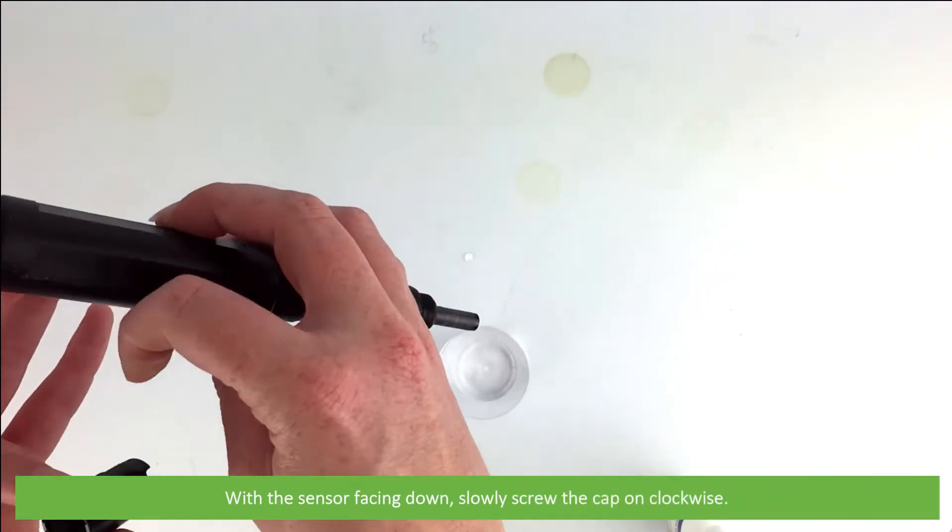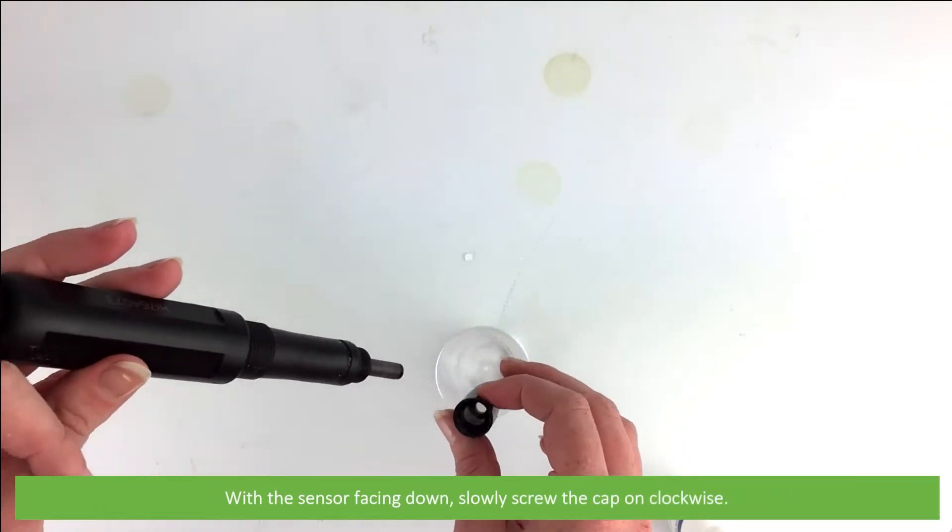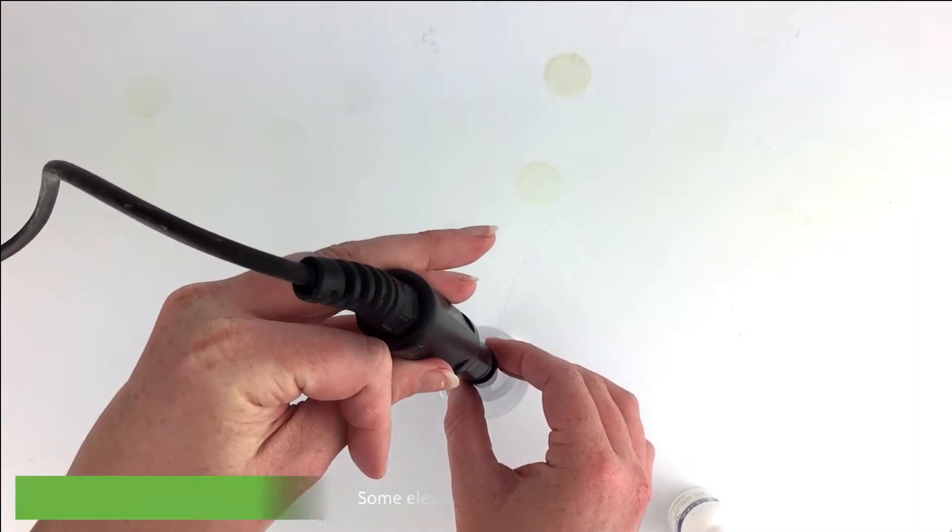With the sensor facing down, slowly screw the cap on clockwise. Some electrolyte will overflow.